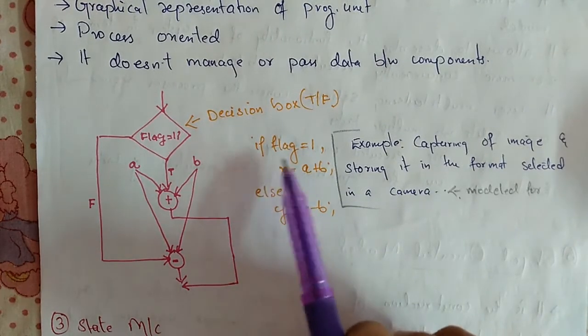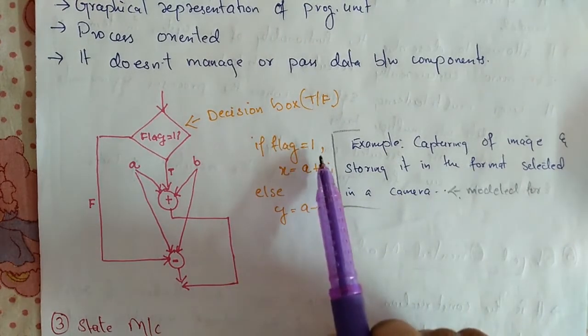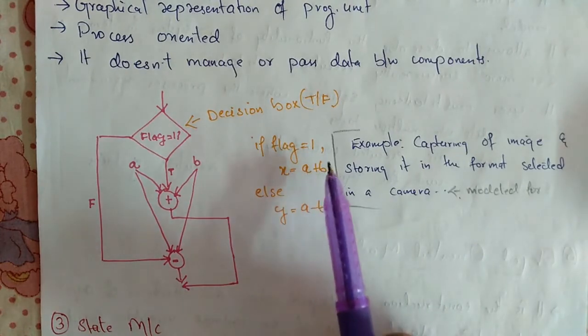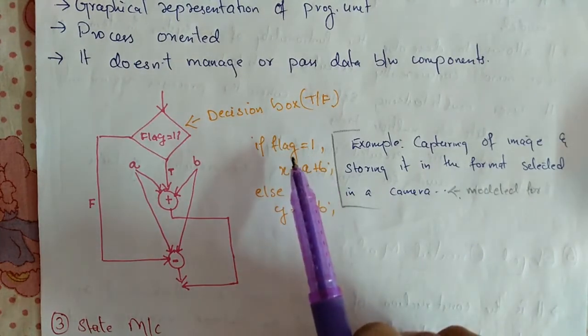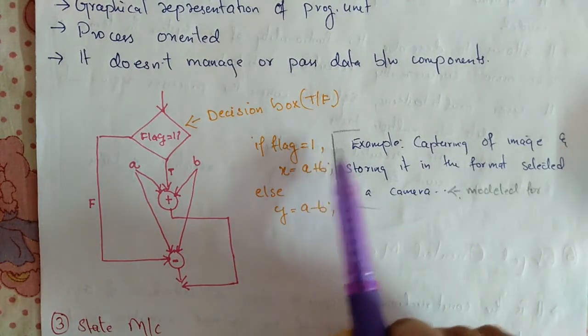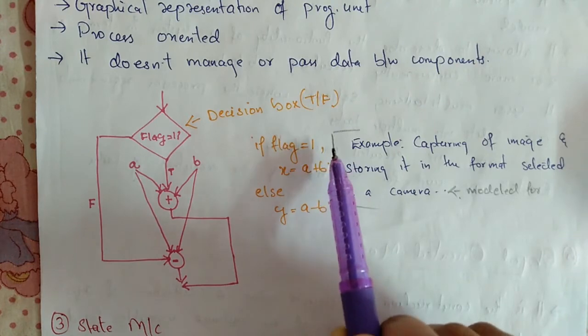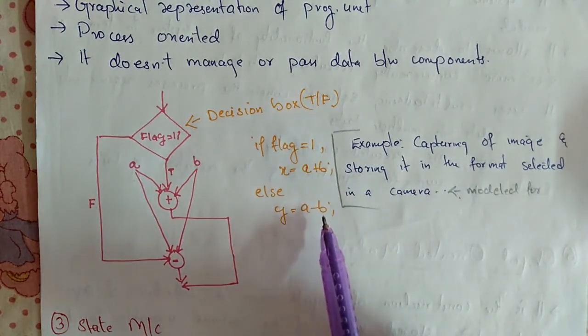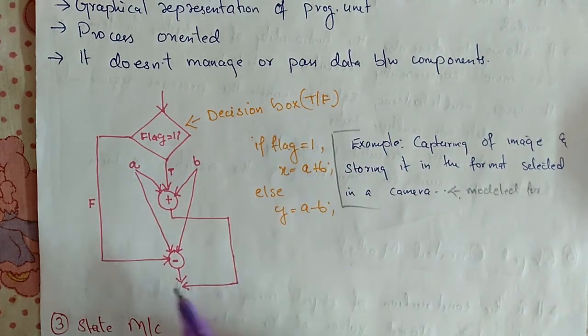You can see the example here. The condition is: if flag equals 1, then x = a + b; else if flag is 0 or something other than 1, then y = a - b.